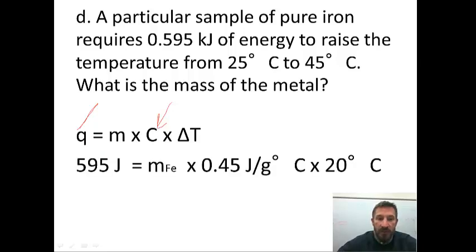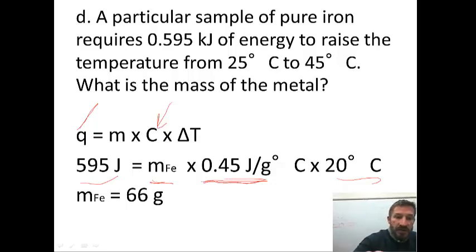So let's insert all those numbers. Notice I changed kilojoules to joules here. This is the number we're looking for, the mass of the iron. And then this is a constant. This would be in a table in your textbook, or you can look it up online. And this is our change in temperature. So now you just need to take the energy in joules, divide it by your specific heat, and then divide it by 20. And your answer for this should be the mass of the iron is 66 grams. So that's your final answer.